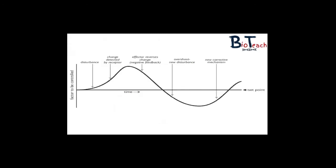We can also depict negative feedback in a graph format. On the y-axis you've got the factor to be controlled, and on the x-axis you've got the set point and time. You can see where the disturbance has been caused — for example, this is when you wake up in the morning, this is the measure of your blood sugar level. A disturbance here would be you eating breakfast; your blood sugar level would start to increase, hence the graph would go up. That change would be detected by a receptor, and once detected, it will bring about the negative feedback loop to ensure your blood sugar level doesn't rise above a certain point. So the effector will basically reverse that particular change — that's the negative feedback.